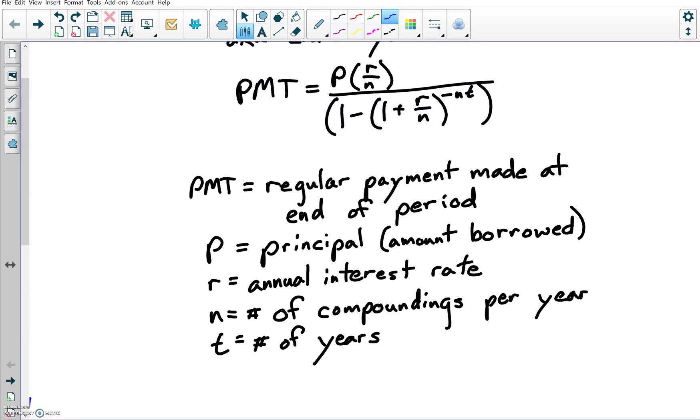One thing to keep in mind with this formula, the expectation is that the number of compoundings and the number of payments made per year are going to be the same. So if you're compounding monthly, you're making monthly payments.